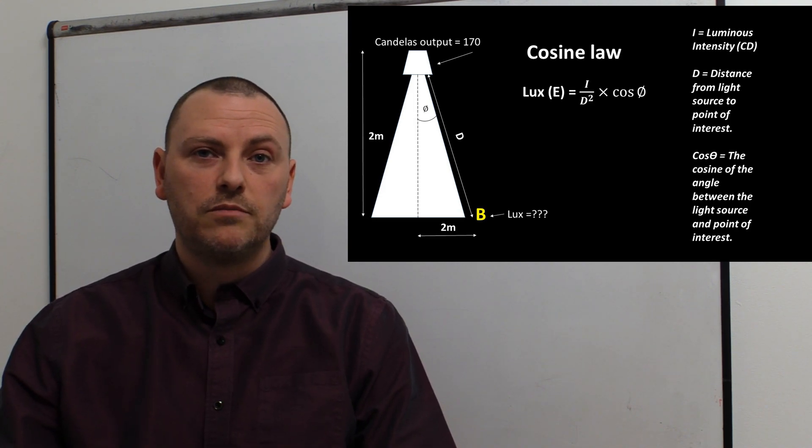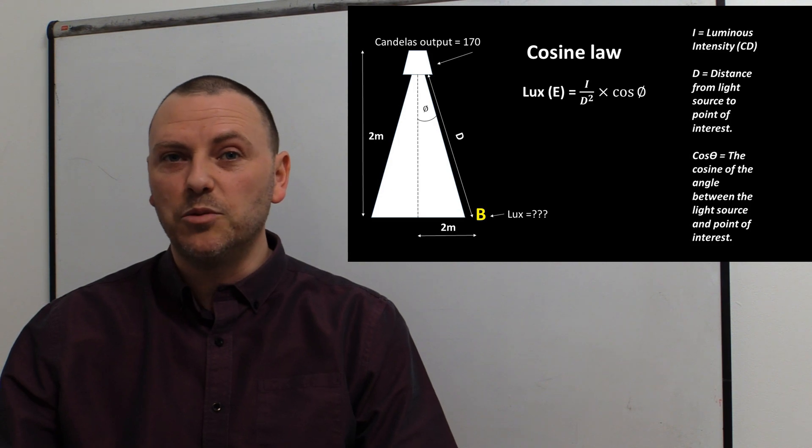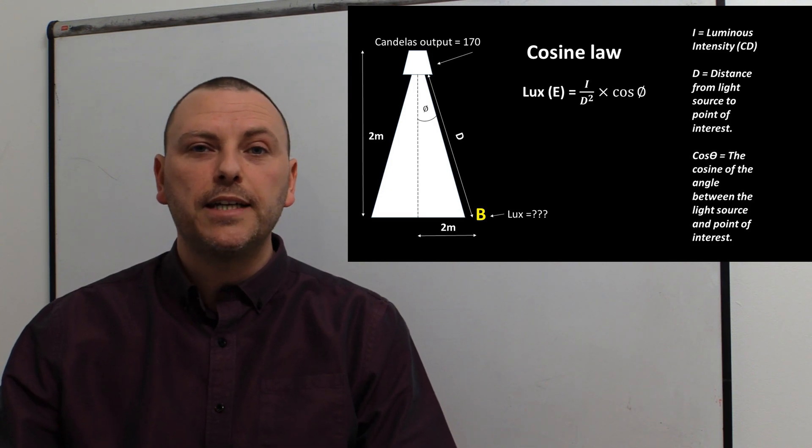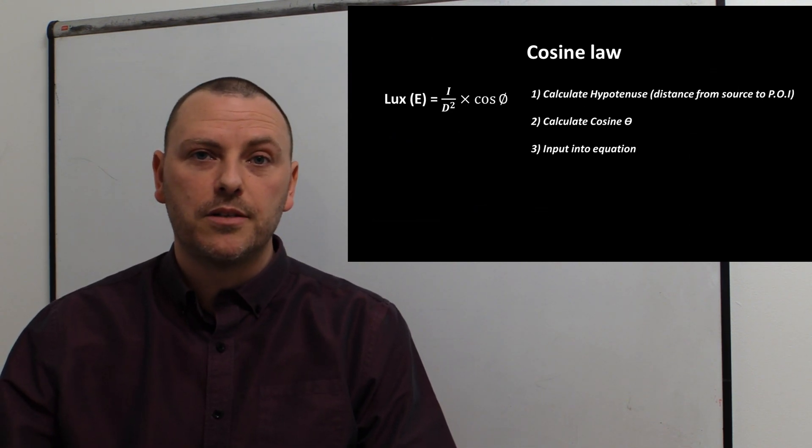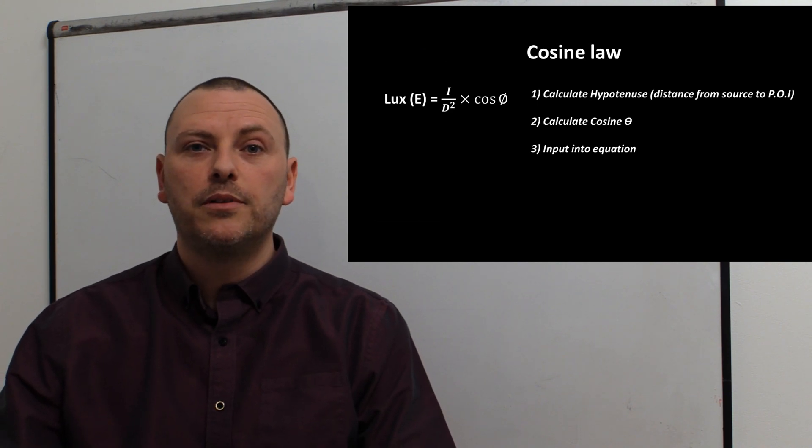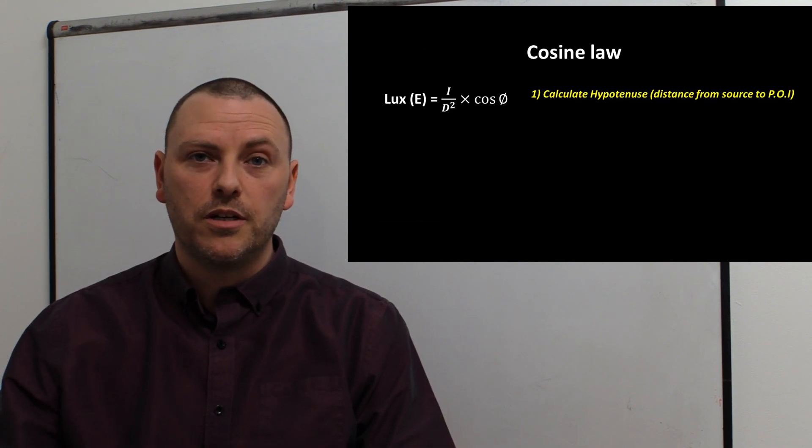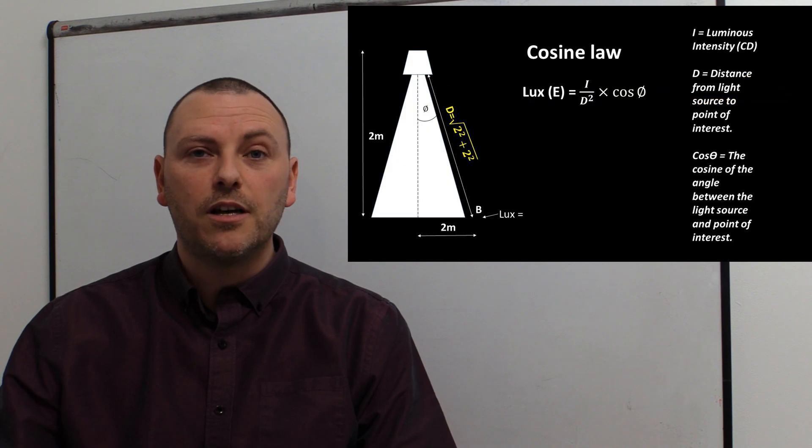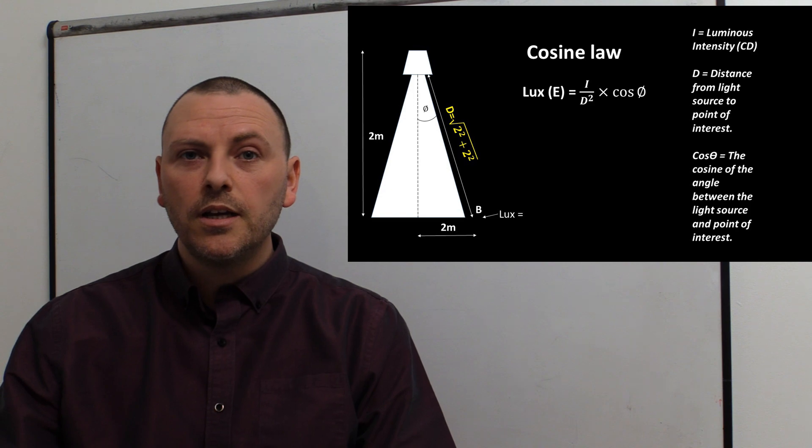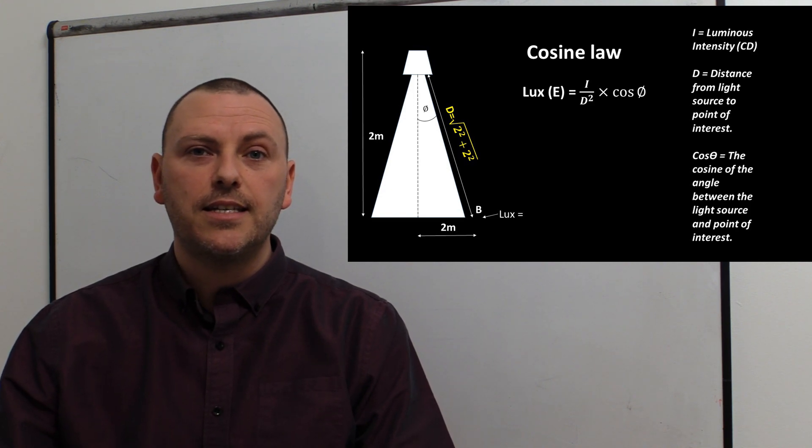What we've got is the inverse square law but with the angle to deal with as well. We're going to break this down into three steps. The first step is calculate your hypotenuse, which is our distance from the light source to the point of interest - a straight line distance.